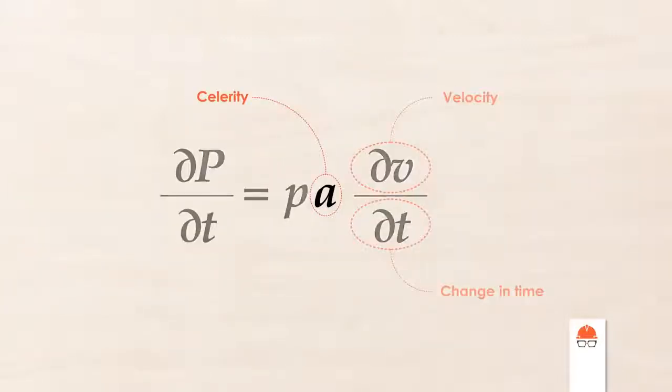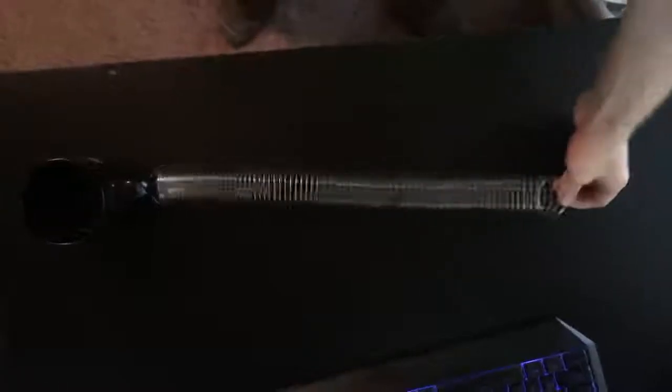The final parameter we can adjust is the speed of sound through the fluid, also known as wave celerity. This describes how quickly a pressure wave can propagate through the pipe. The wave celerity is an indirect measure of the elasticity of the system, and it can depend on compressibility of the fluid, the material of the pipe, and whether or not it's buried in the ground.